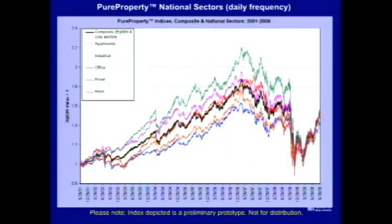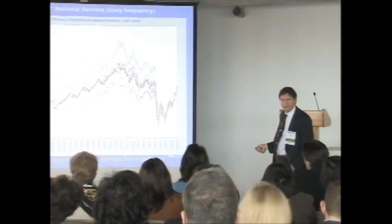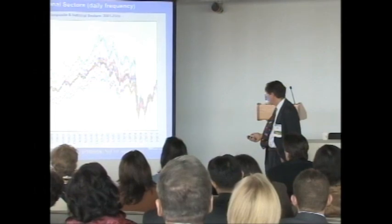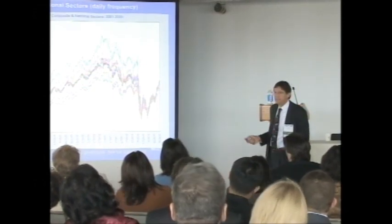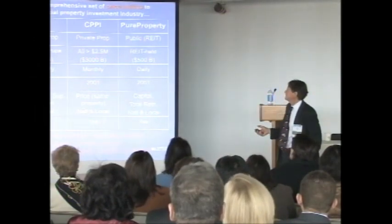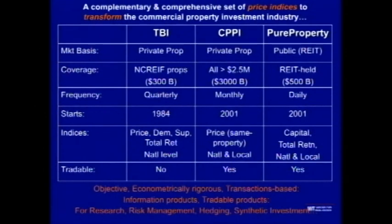And we can break it down into types of properties. Here we're showing the five major property sectors: apartments, industrial, office, retail, and hotel. And you can see how that sort of splays out during the big up market — how the different sectors kind of pulled apart — and then in the big crash, everything crashed together. This is correlations going towards one in a big crisis. This is just a prototype; it doesn't carry us too far into the recovery. But this is, I think, a very exciting index product. Basically, what we've done is a complementary and comprehensive set of new price indices that I think can have a transformational impact on the industry.